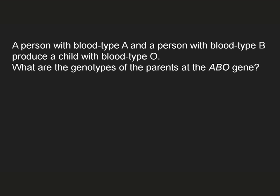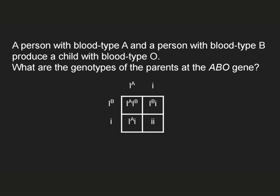Let's work through an example problem. If a person with blood type A and a person with blood type B produce a child with blood type O, what are the genotypes of the parents at the ABO gene? The solution is shown in a Punnett square. I started by knowing that a child with blood type O must be little i, little i. A parent with blood type A must be IA something, and a parent with type B blood must be IB something. The child must have gotten one little i allele from each parent, so in each case that something must be a little i. The Punnett square demonstrates this and shows the proportion of offspring expected with other blood types.